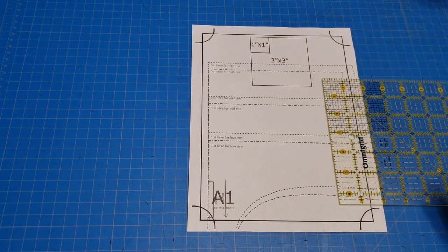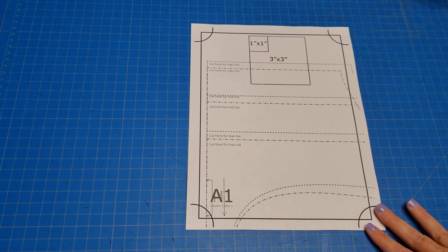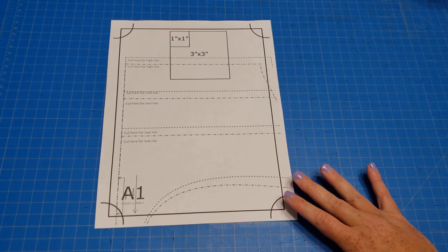But you can use whatever you have on hand. Just keep in mind that if you're using a soft ruler like a measuring tape, they can stretch out over time, so that's something to pay attention to and double check before you use it for measurements.